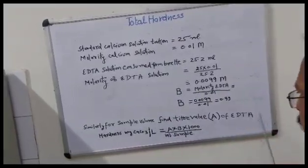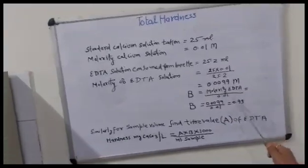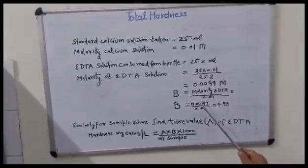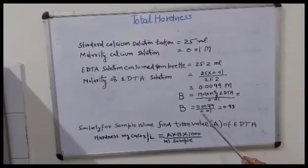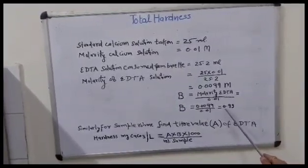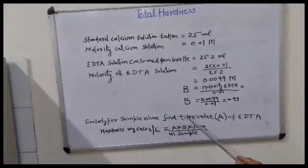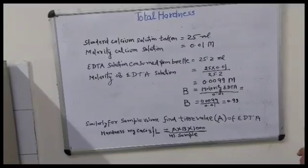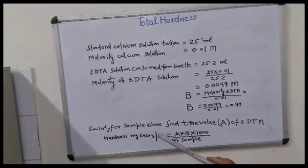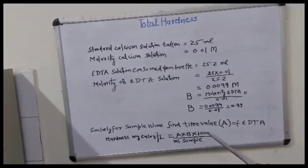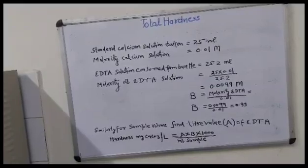B is a factor used in our calculation for hardness. B is equal to molarity of EDTA divided by 0.01. B is now 0.0099 / 0.01 = 0.99. Similarly, for the sample volume, find the titer value A of EDTA from the burette. Hardness in milligrams of calcium carbonate per liter equals A × B × 1000, divided by the milliliters of sample solution taken in the conical flask.